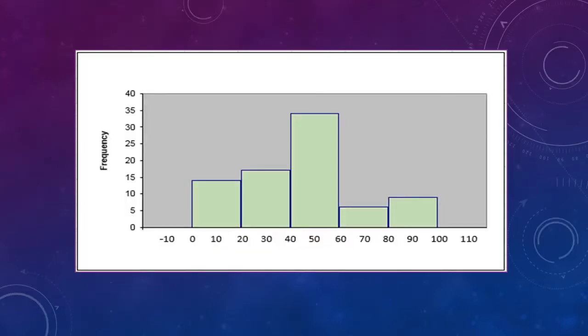Remember how histograms worked? We had a bunch of boxes all sitting beside one another. For example, the tallest box here you see has values listed between 40 and 60. That means that it represents all observations whose values are at least 40 but less than 60. Each category includes its lower limit but stops just short of its upper limit. You can see from the height of the box that there are 35 observations between 40 and 60.